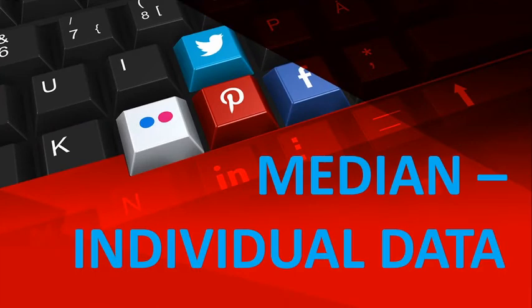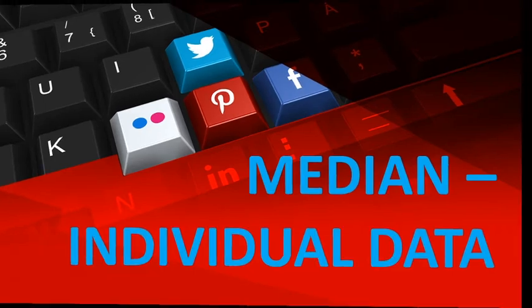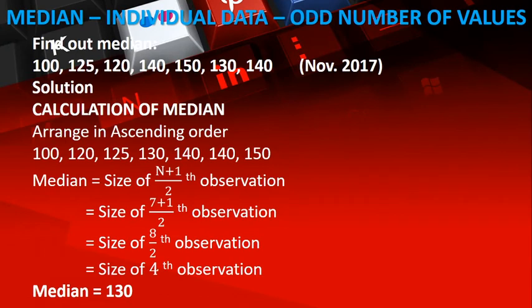As already known, individual data is nothing but individual x values. Individual numbers are given and we are going to find the median, which is the middlemost value. While finding the median of individual data, we have to find it in two different ways. For odd number of values it varies, and for even number of values it varies.